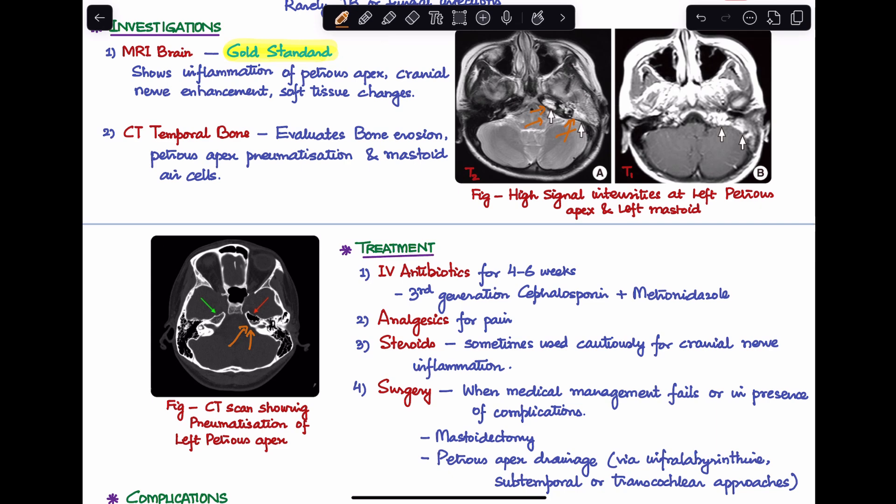How will we treat the disease? First of all, you'll give IV antibiotics for four to six weeks, usually third generation cephalosporins are used along with a combination with metronidazole. We'll give analgesics for pain and sometimes steroids are given cautiously for cranial nerve inflammation. If after the medical management has failed or it is leading to more intracranial complications, surgery is the only treatment of choice. The different surgeries you can perform are mastoidectomy or petrous apex drainage which we can approach through different routes like the infralabyrinthine, subtemporal, or transcochlear approaches.